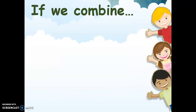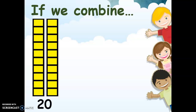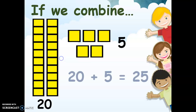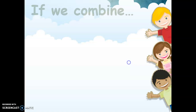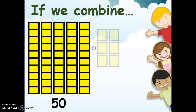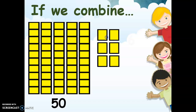So if we combine two longs, they are 20, plus 5 units. The number will be 20 plus 5 equals 25. And if we combine — how many longs do we have? 1, 2, 3, 4, 5. We have 5 longs, so how many are they? 50. And then we have 6 units. So if we combine them together, 50 plus 6 is 56.